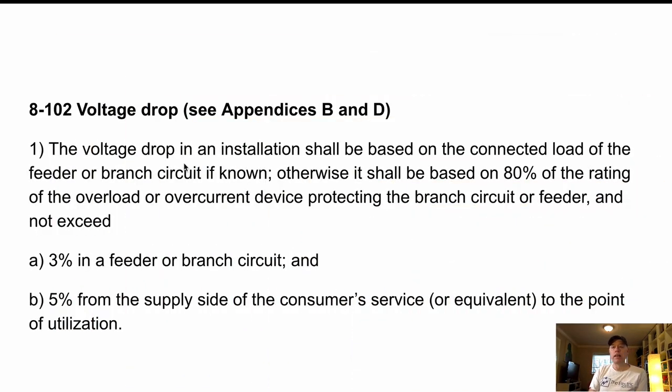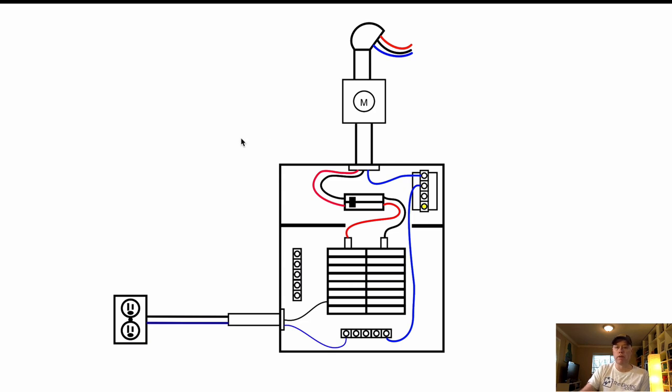Next we've got items A and B here and it says that they should not exceed, your volt drop can't exceed 3% in a feeder or branch circuit or 5% from the supply side of the consumer service or equivalent to the point of utilization. Got a little drawing drawn up here for you. Now when they talk about the 3%, what they're talking about is from the breaker all the way over to the point of utilization. So that's where the plug would be or your load basically. I've just got a picture of a plug there, but you know what I mean. I could have a load, a disco ball, I don't care what you have, but the load is at the point of utilization.